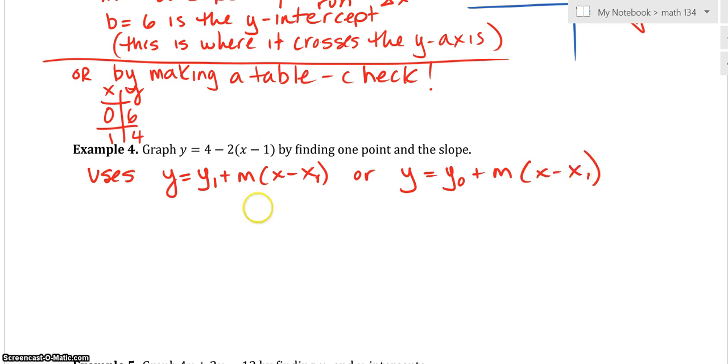So this tells us that the slope is still -2. But the point, what's the point? The point, notice the minus sign is already there. So there's a point x1, y1.